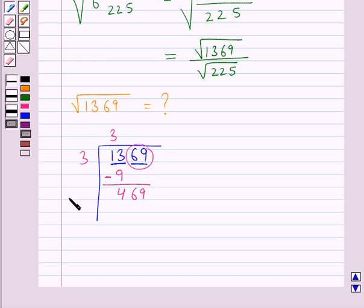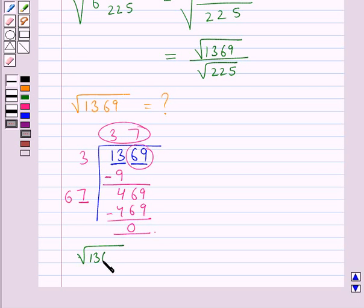We double this quotient to get 6 and put a blank. 67 times 7 is 469. We get 0 as the remainder, so this quotient is the square root of 1369. Thus, the square root of 1369 equals 37.